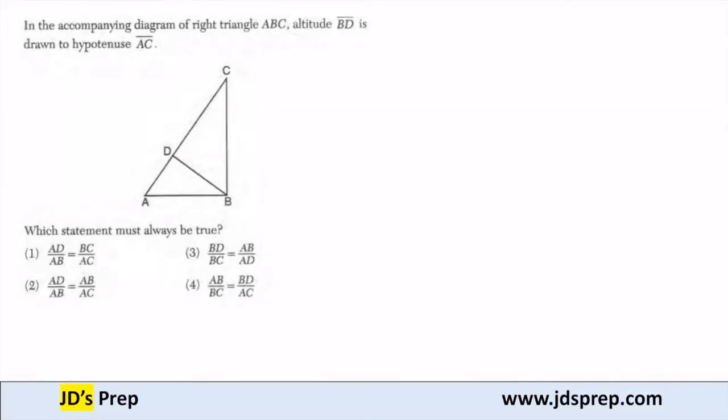Hello, welcome to JD's Prep. In the accompanying diagram of right triangle ABC, altitude BD is drawn to hypotenuse AC.